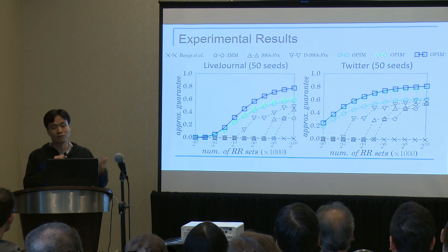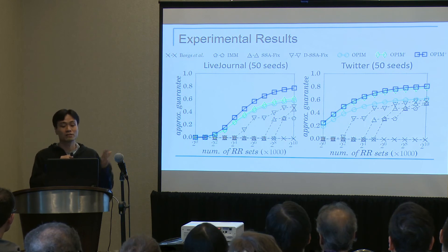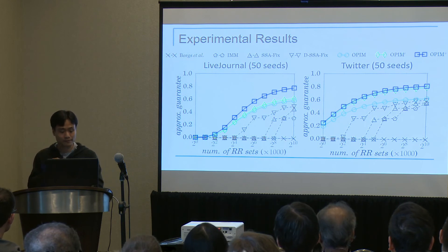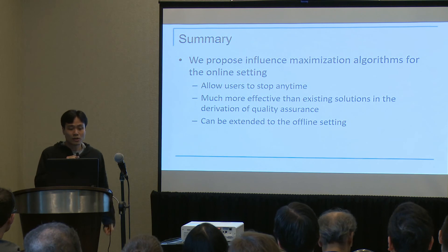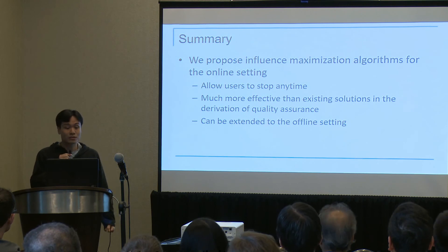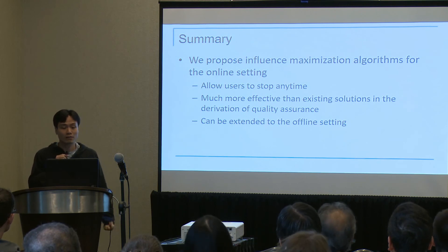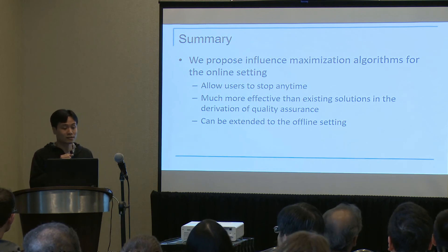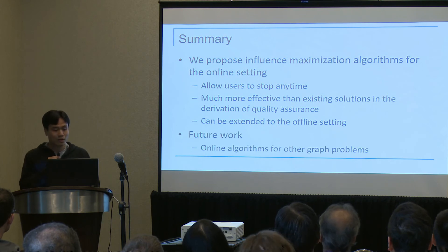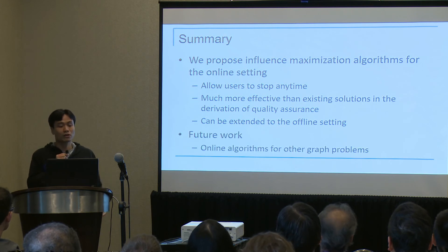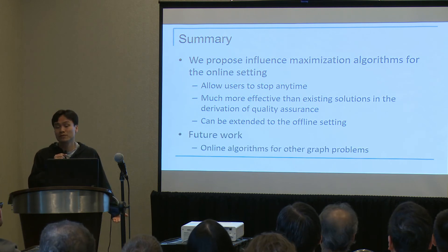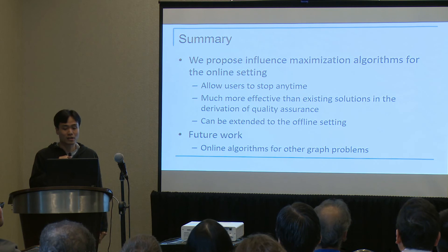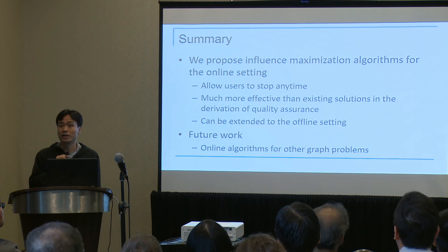So a user can stop much earlier. To conclude, we propose influence maximization algorithms for the online setting. For future work, we would like to look into online algorithms for other graph problems, such as the computation of centralities.